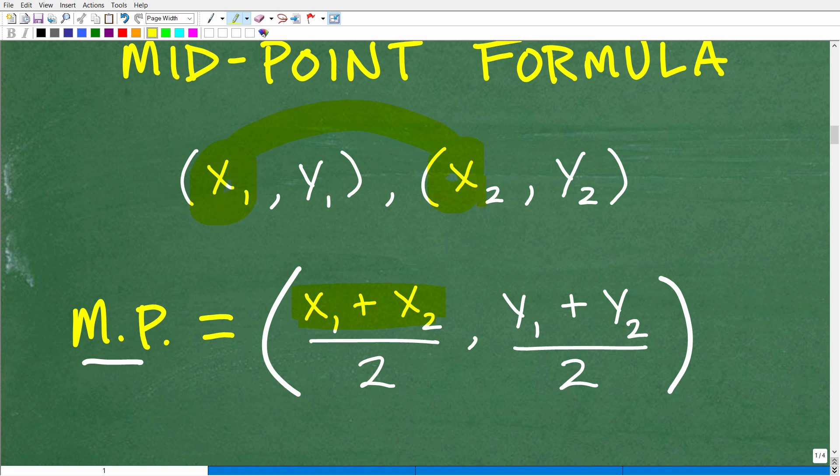Well, we just take this point, add it to this point, and divide it by 2. We have two pieces of information. So it's x1 plus x2 divided by 2. And then to find the y coordinate of the midpoint, we're simply going to add up the y's and divide it by 2. But effectively, you're just finding the average.